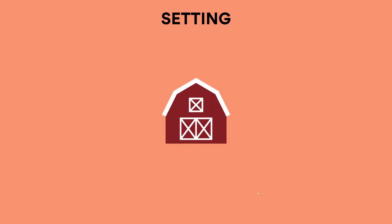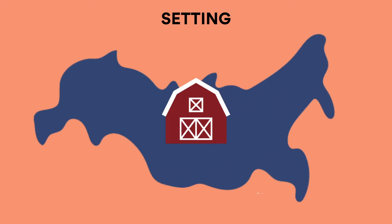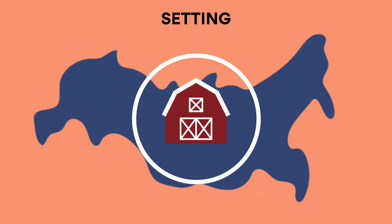Setting. The novella is set in Manor Farm, located in Willingdon, England, at an undisclosed time. As the events of Animal Farm symbolize the power struggle of early 20th century Russia, this ambiguity of time is intended to prevent Orwell's warning against repressive tyranny from becoming dated. Orwell's use of a farm as the main setting is also notable, as farms represent nations in Animal Farm and both require a vast amount of work in order to function properly. Thus, the act of the animals cooperating to cast the humans out of the farm symbolizes a workers' revolution against oppressive leadership.